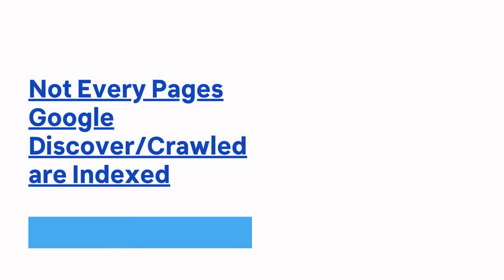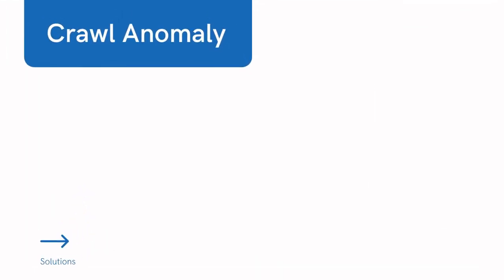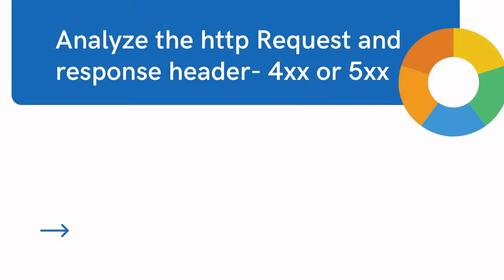Let's come back to our issues. You get crawl anomaly issues usually when Google requests a URL and instead of receiving a 200 OK signal, it receives some other response code like 4xx or 5xx. My recommendation is to analyze the HTTP request and response headers of those URLs. If you have a bulk amount of URLs, there are many tools to check HTTP request and response headers — you can use free tools to analyze them.